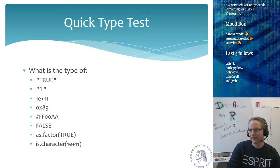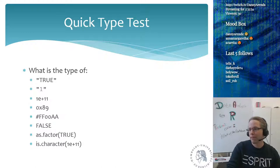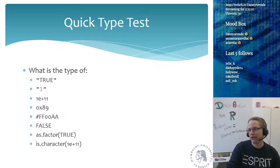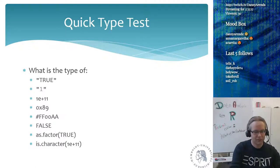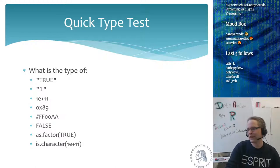Question four is also numeric. Bonus points for anyone who knows which number this is — it's written in hexadecimal format. The prefix 0x means it's in hex. It's 8 times 16 plus 9, which equals 137.